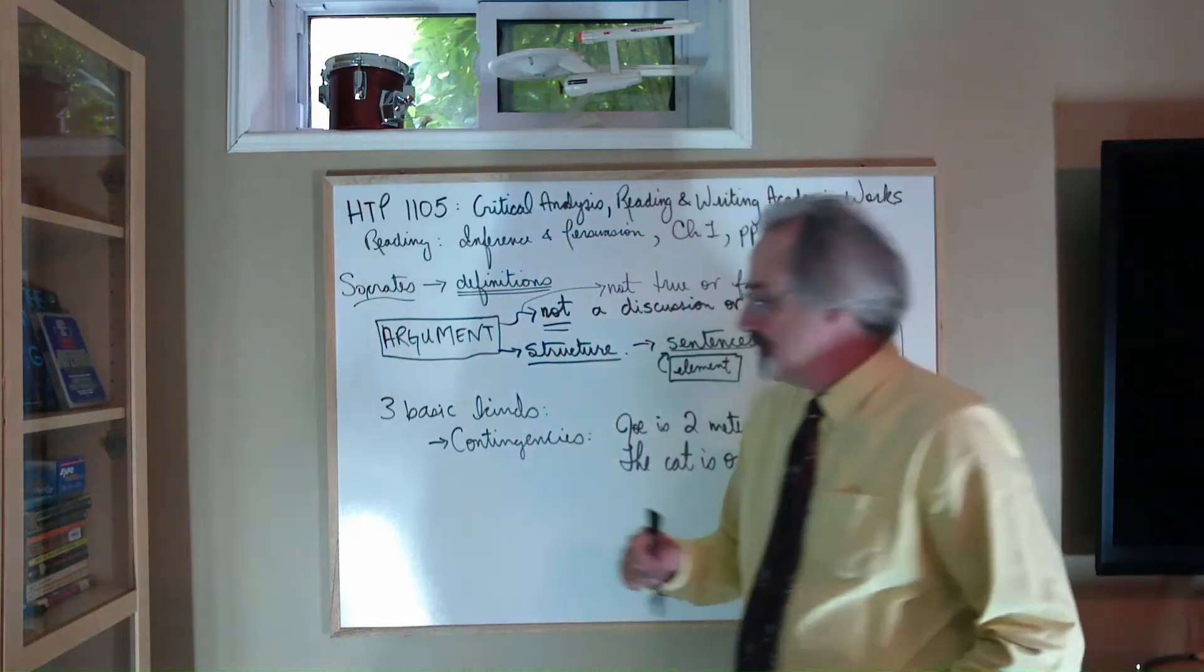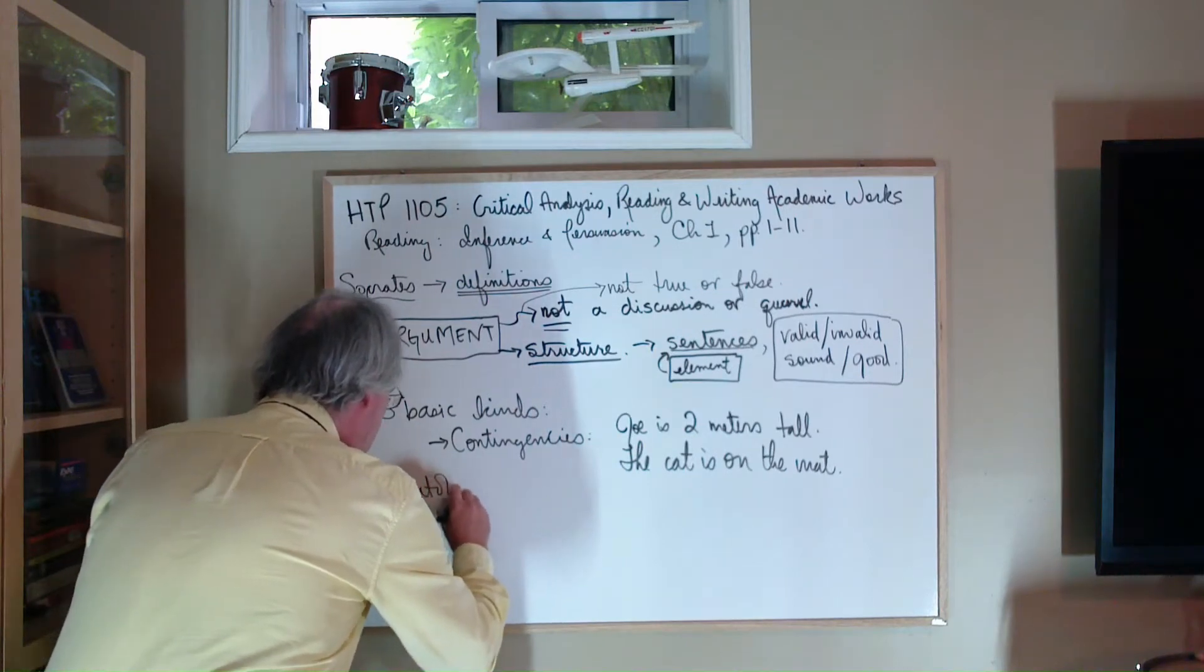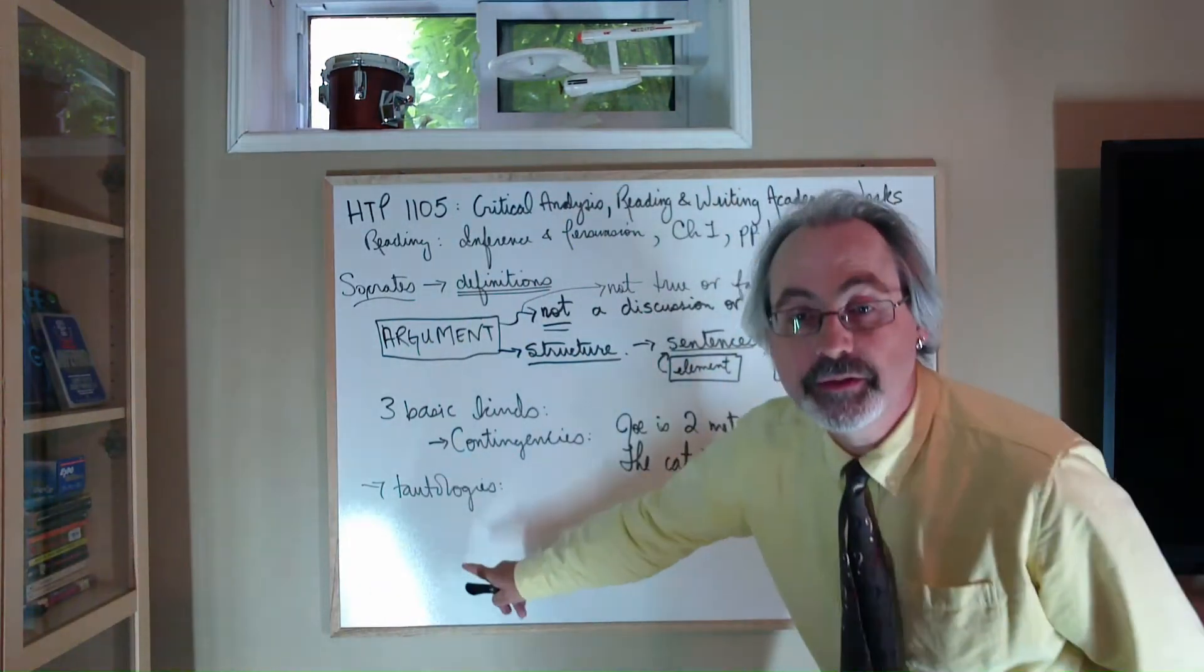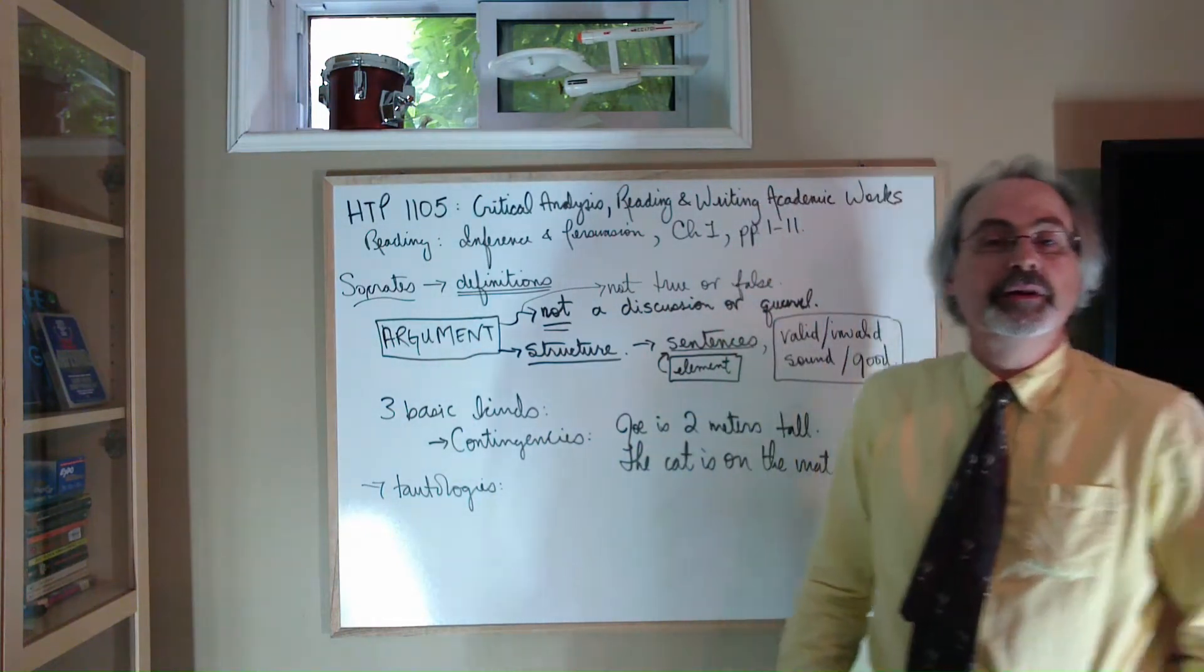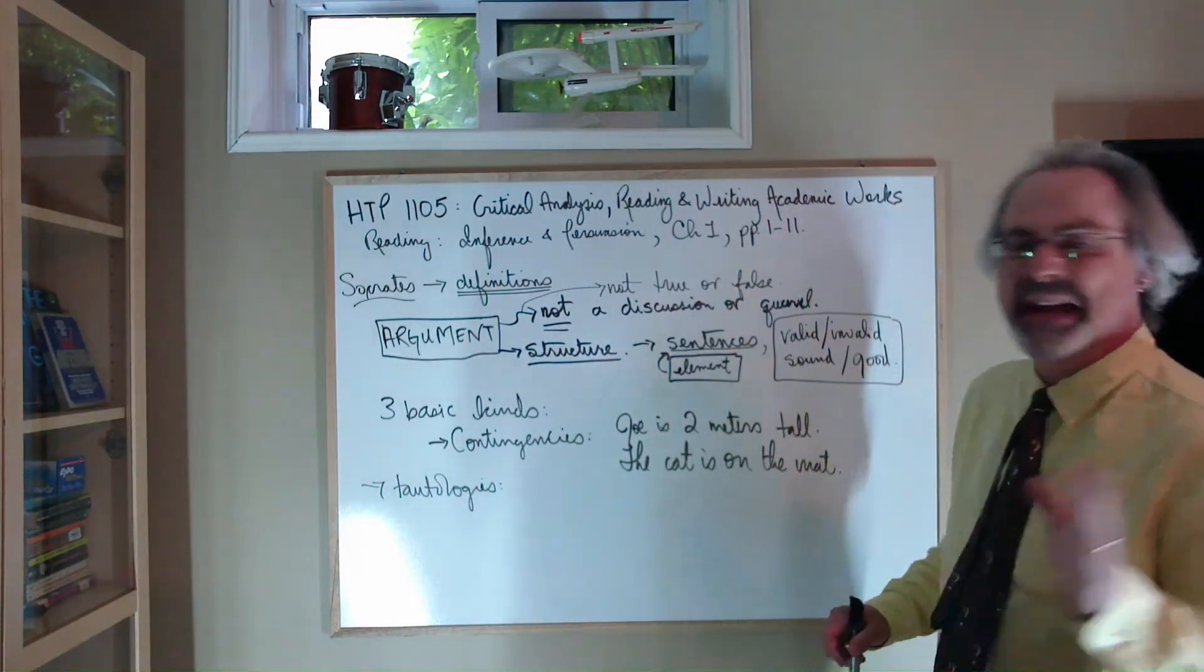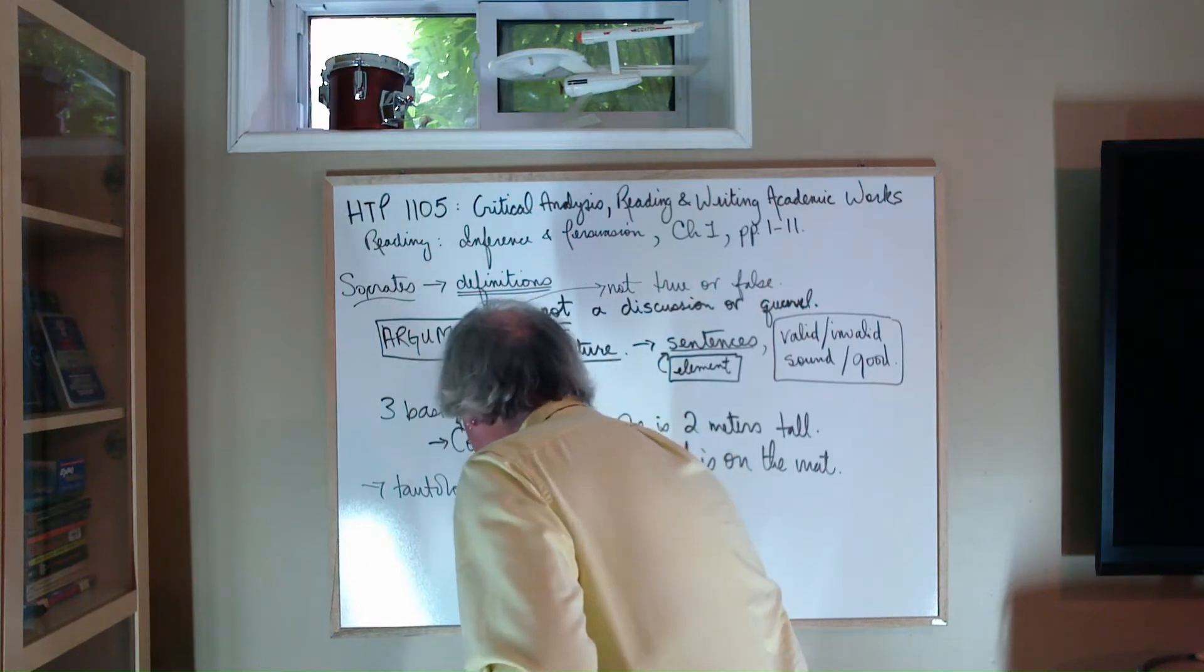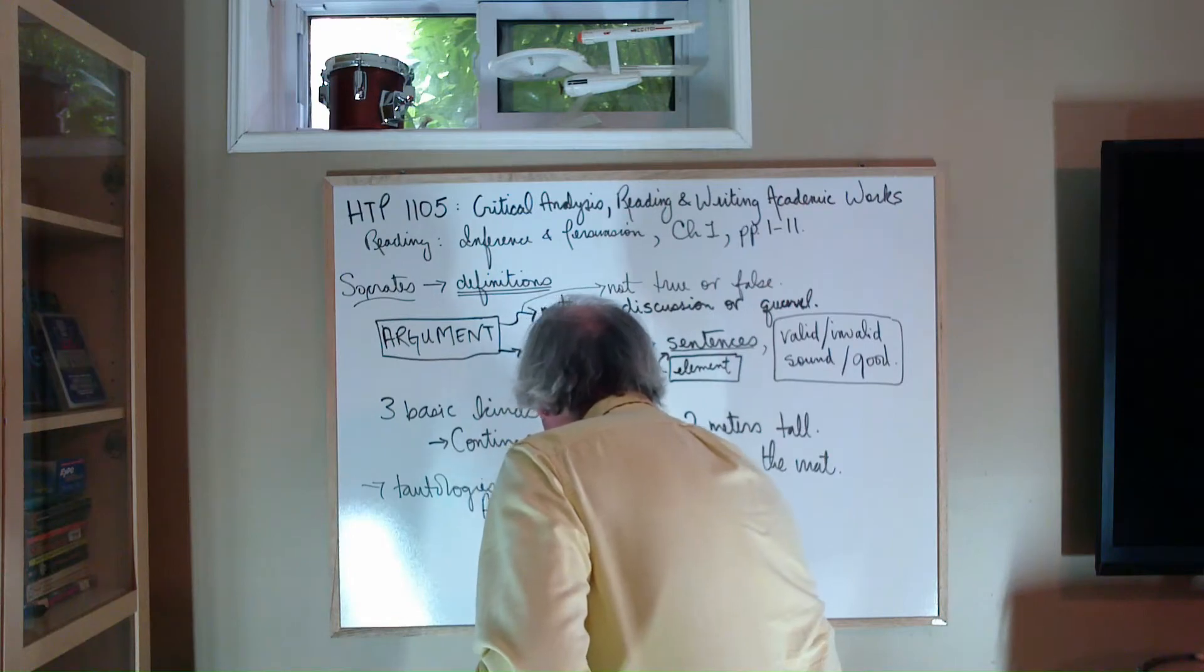So the second are tautologies, okay? I'll try not to write too low that you can still see that. So tautology, these are sentences that have to be true, they're always true. I'll give you a simple example. A car is a car. The red hat is red.